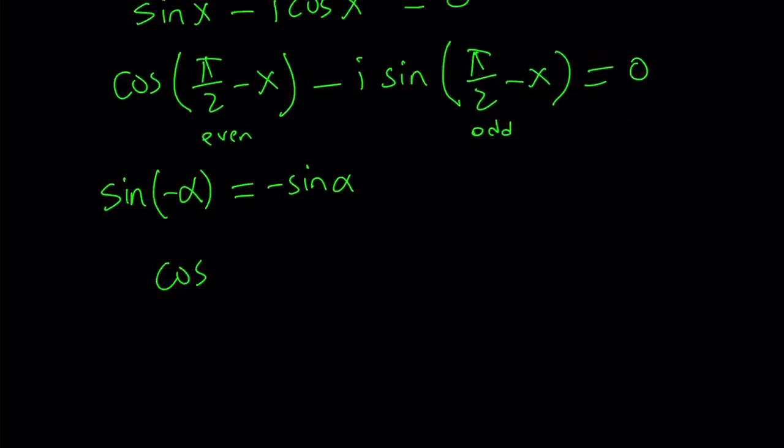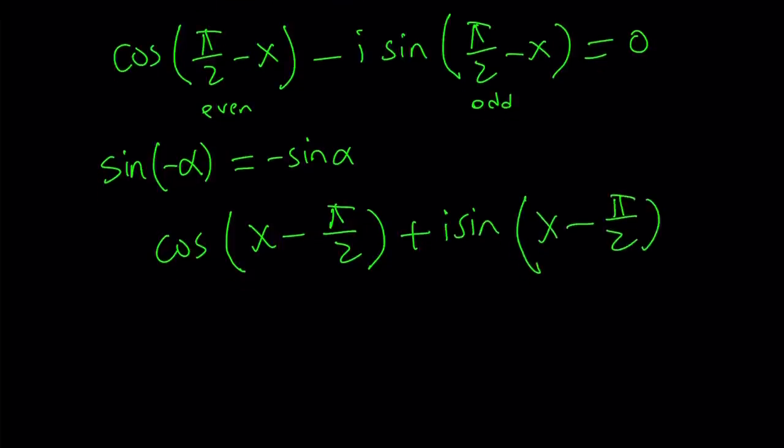So we can safely say that, hey, this is equivalent to cosine of x minus pi over 2 plus i sine x minus pi over 2. So I got rid of the minus sine because I use the opposite of pi over 2 minus x.